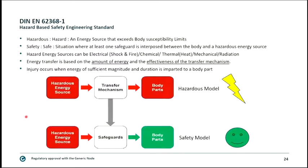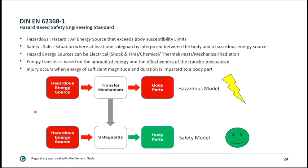Hazard means an energy source that exceeds body susceptibility limits — for example, voltages over 40V can lead to cardiac rhythm issues. A safe situation means safeguards are interposed between the human body and a hazardous energy source. Hazards can be electrical, chemical, thermal (heat), mechanical, or radiation.